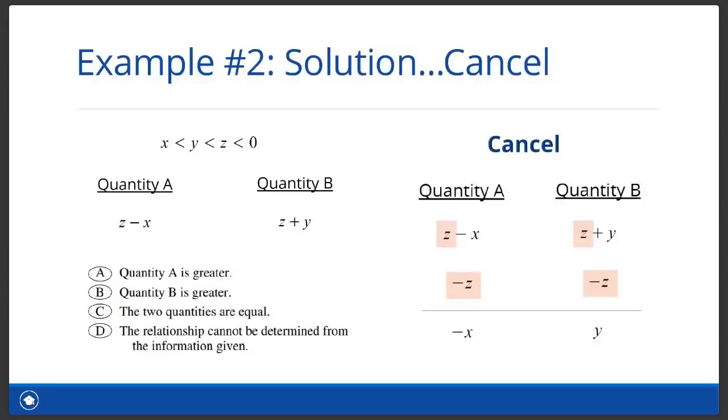Since we only have one row of inequalities, we won't use the add technique here. However, we see that both quantity A and quantity B have the variable Z. This tells us that we should use the cancel technique to simplify. So here we see Z on both sides, so we just subtract Z from each side. So we've moved from two variables in each quantity to just one variable in each quantity. Negative X for quantity A and Y for quantity B.